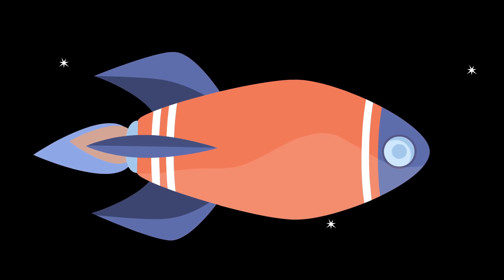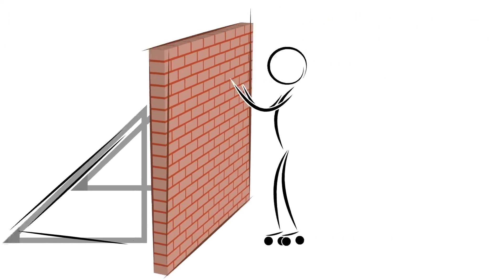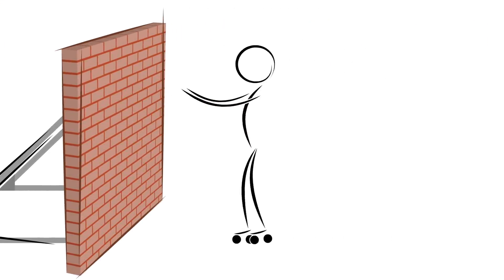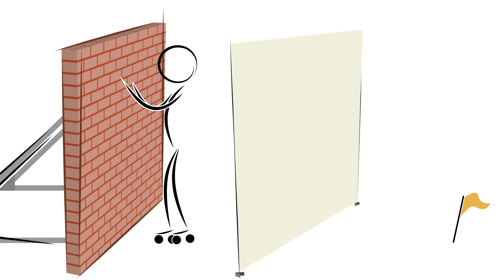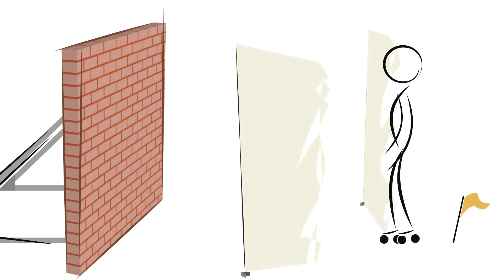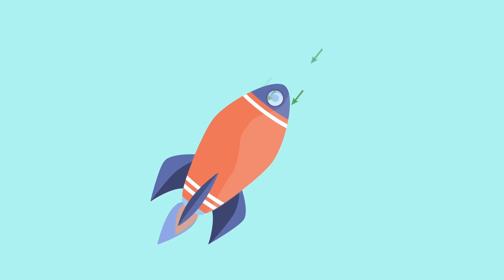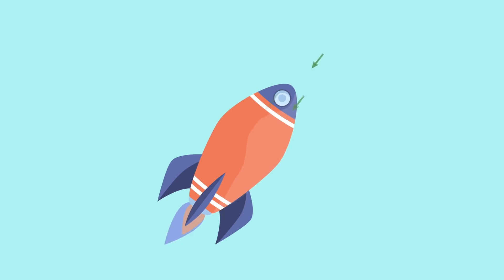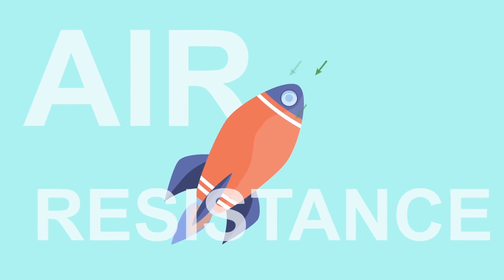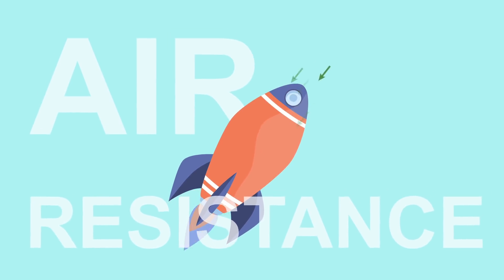In fact, air is a hindrance to a rocket's motion. Picture that person on roller skates pushing off the wall. But now, instead of rolling freely, there is a thin wall of paper in their path. There's not much resistance there, but there's enough to slow them down the slightest bit. Air acts in the same manner by providing the tiniest bit of slowing force, known as air resistance or drag, on whatever is passing through it.